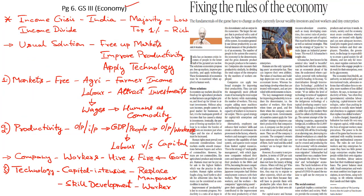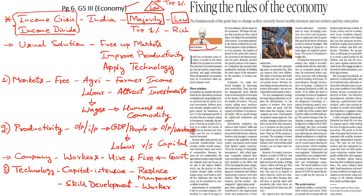Now let's take up another column from page number 6 written by Arun Maira, a former member of the erstwhile Planning Commission of India. In this column, the writer talks about the income crisis and the income divide facing the country. The writer argues that the income of a majority of people in the country falls in the low category. He points out that incomes of people in the lower half of the pyramid are extremely low, whereas the top 1% represented by wealthy investors have extremely high incomes and represent the ultra-rich.